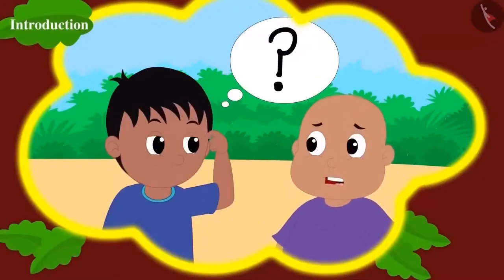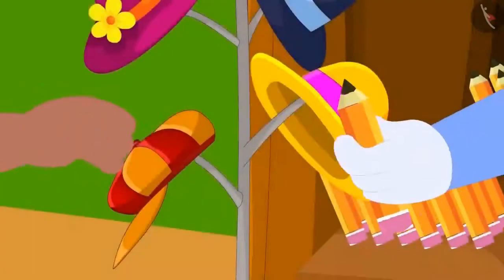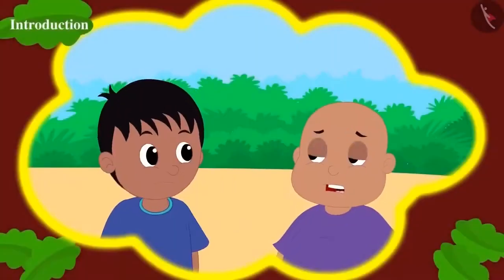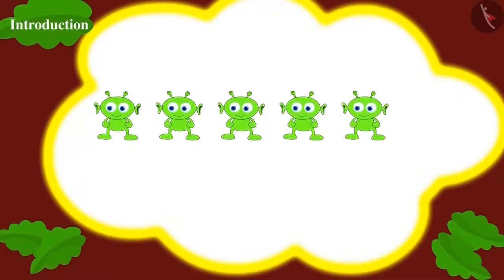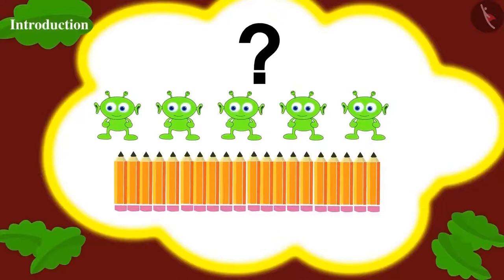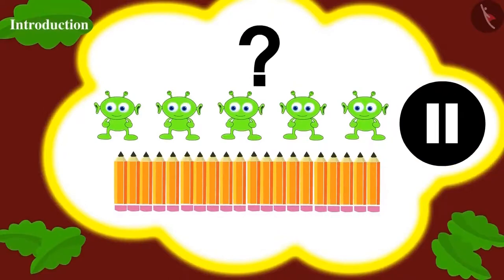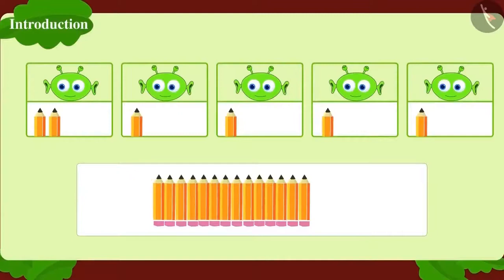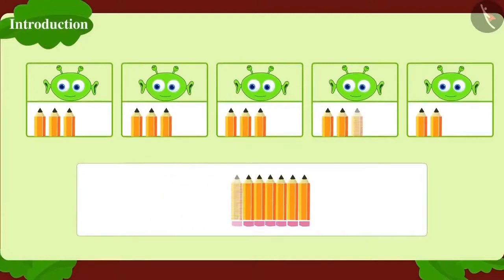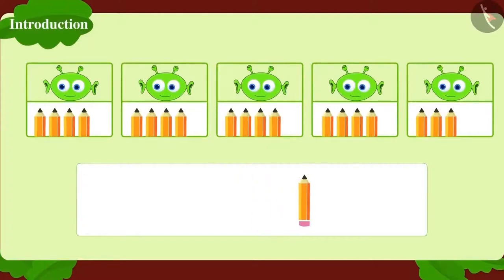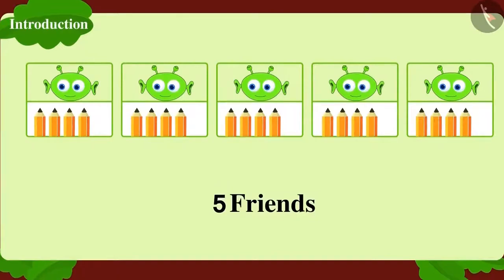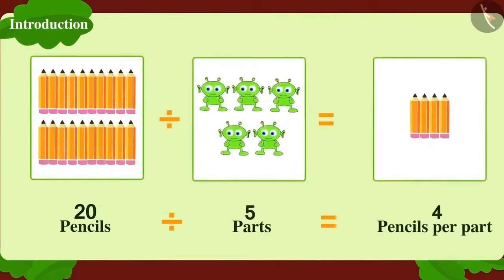Raju and Bablu also bought 20 pencils as gifts. They need to distribute them among five of Jeev's friends. We can divide 20 pencils among five friends so that each friend gets 4 pencils. We write this as: 20 pencils ÷ 5 parts = 4 pencils per part.